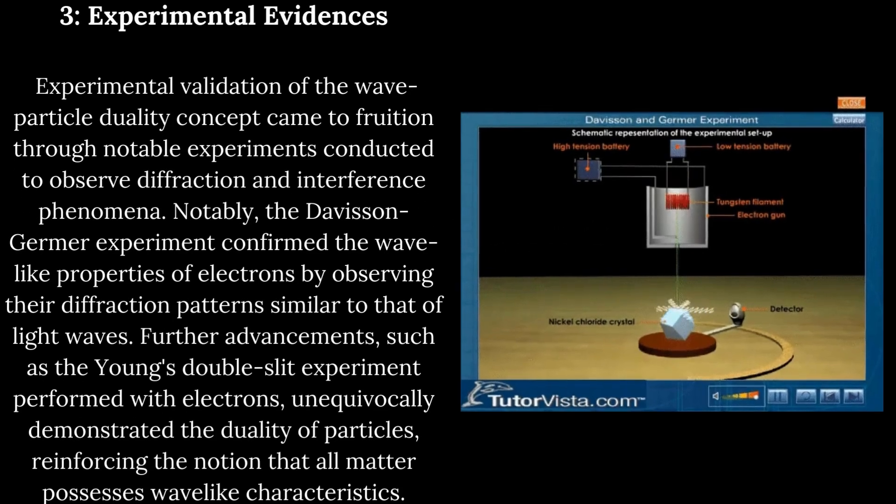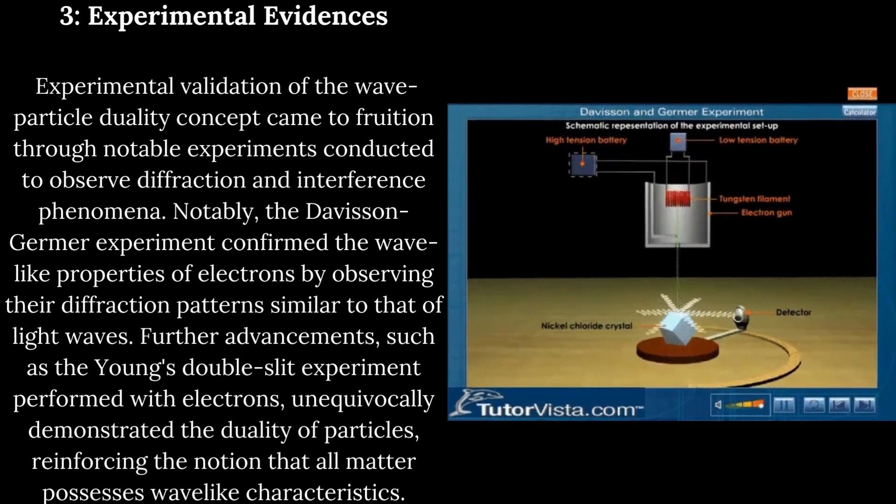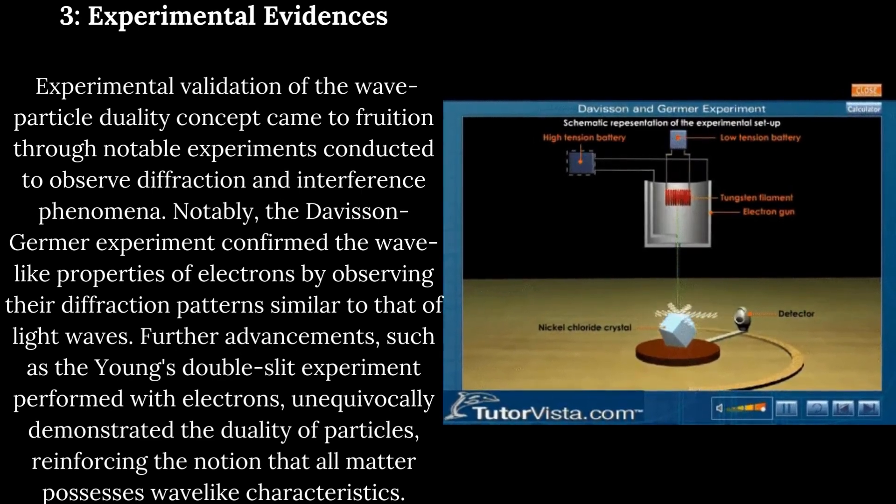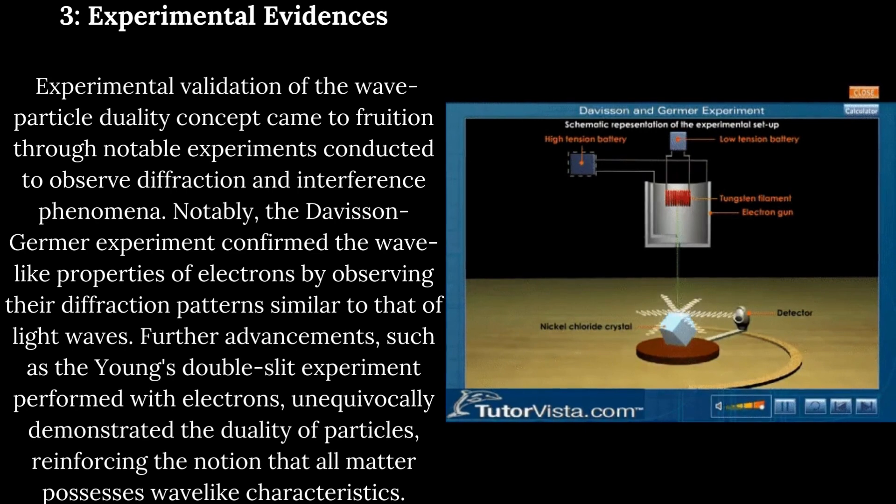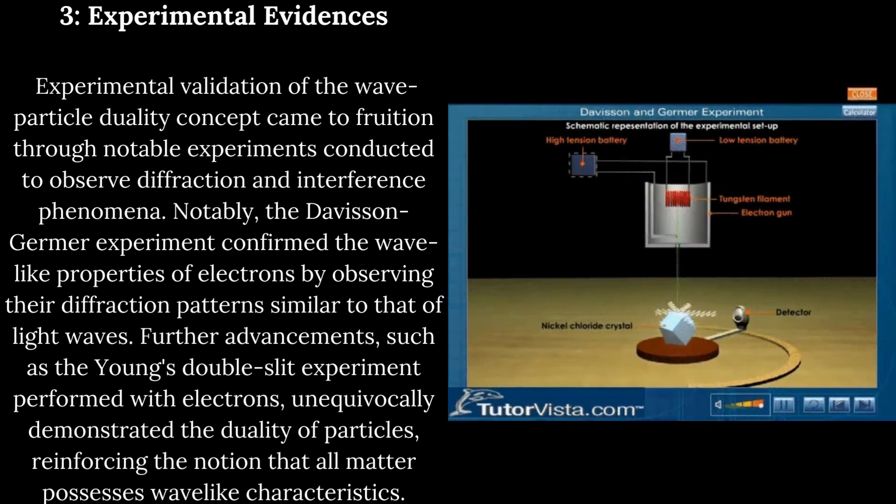Experimental evidence. Experimental validation of the wave-particle duality concept came to fruition through notable experiments conducted to observe diffraction and interference phenomena. Notably, the Davison-Germa experiment confirmed the wave-like properties of electrons by observing their diffraction patterns similar to that of light waves.